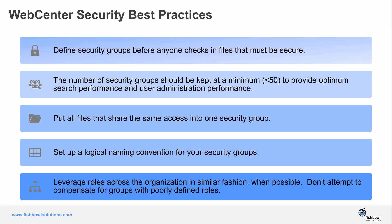Put all files that share the same access into one security group, and then apply the level of granularity you need in terms of your account hierarchy. Make sure you set up a logical naming convention for those security groups, because going back and understanding what that looks like later can be a bit of a challenge. Just looking at your LDAP repository doesn't necessarily give you a view of what people have access to, and when you're looking at hundreds of them, it's a very time-consuming process to evaluate whether someone has the right access. Leverage roles across the organization in a similar fashion where possible. Don't attempt to compensate with groups for poorly defined roles — a contributor is a contributor whether you're in Department A or Department B.